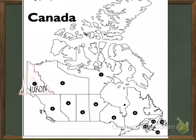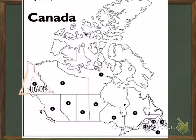Number one, let's take a look at your political map. First, what I want you to notice is we're going to start at the top northwest corner of Canada in its territories.